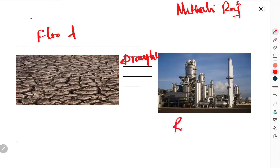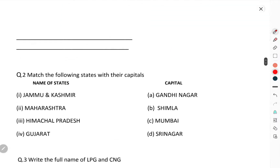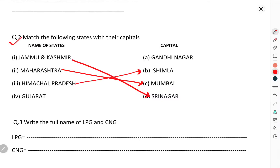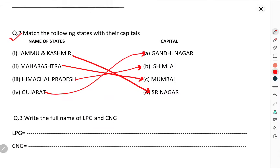And this is Refinery — this is a picture of a refinery. Match the following states with their capitals: Jammu and Kashmir — Srinagar, Maharashtra — Mumbai, Himachal Pradesh — Shimla, Gujarat — Gandhinagar. You have to match all these options.